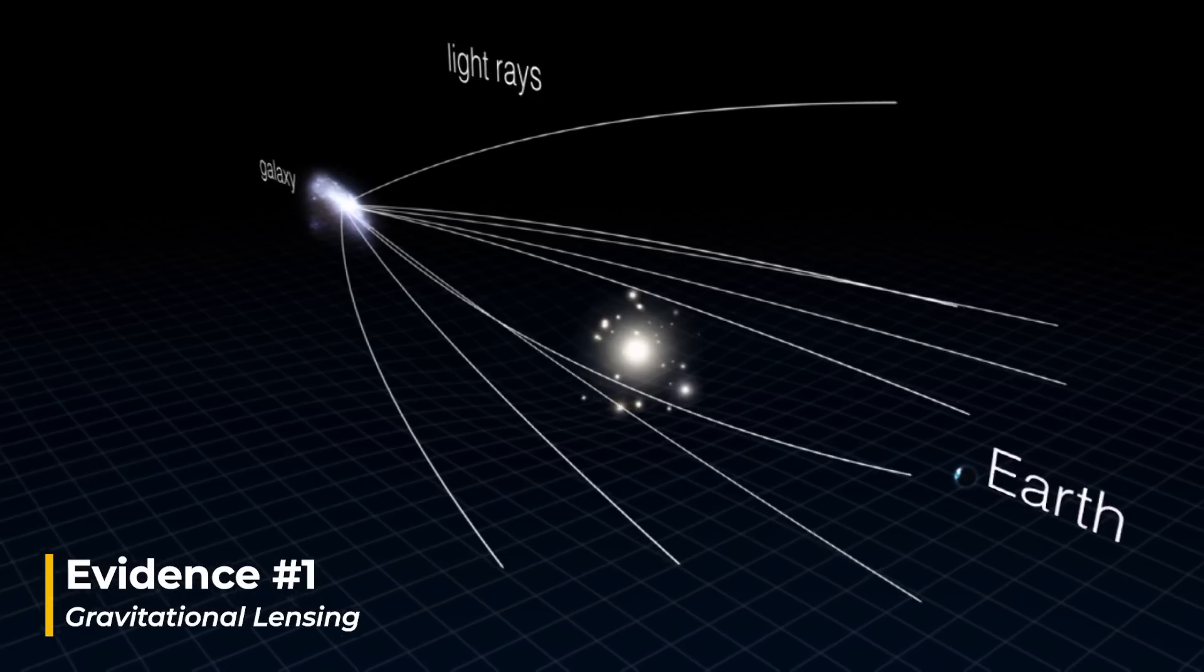In the next couple of decades, the evidence in favor of dark matter simply kept growing. In the 1980s, the observation of gravitational lensing by galaxy clusters, where light from distant objects is bent by the gravity of a massive object like a galaxy cluster, provided further evidence for dark matter.